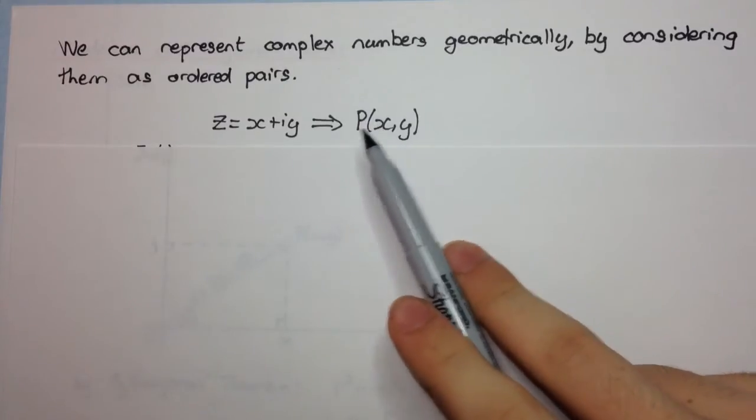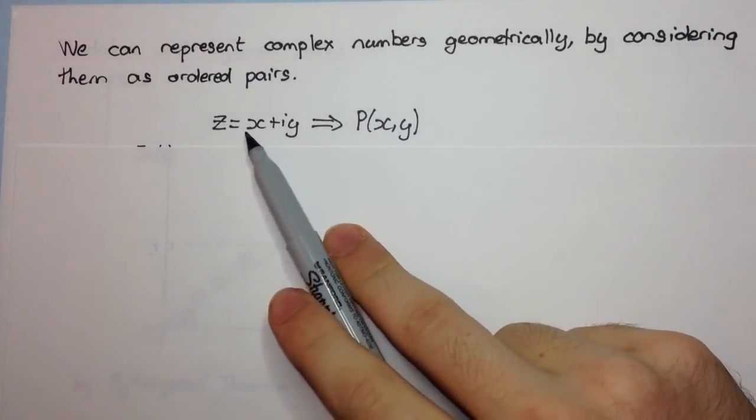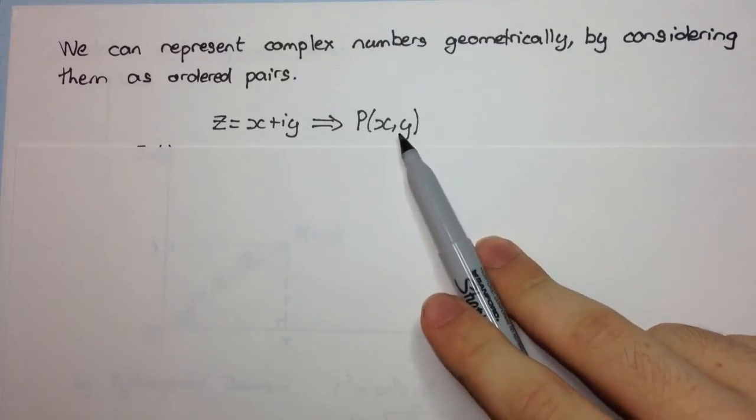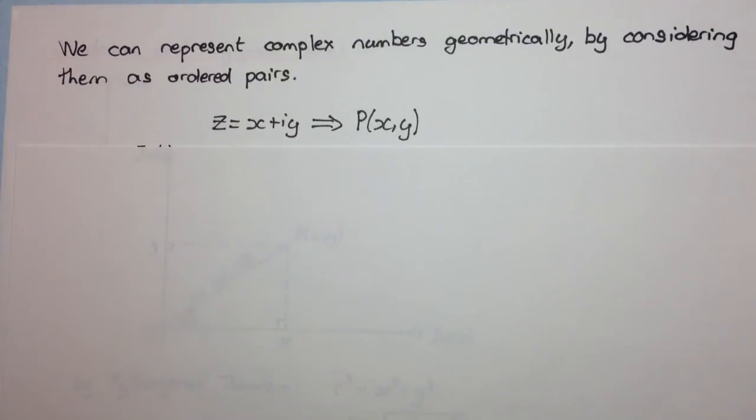So the x-coordinate corresponds to the real part of the complex number, and the y-coordinate corresponds to the imaginary part of the complex number. Okay, and this Cartesian plane that we consider it to be lying on has a special name. It's called the Argand Diagram.